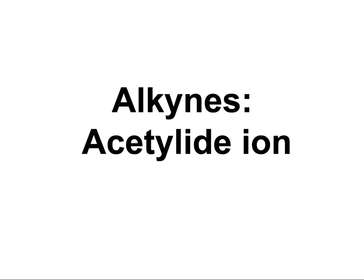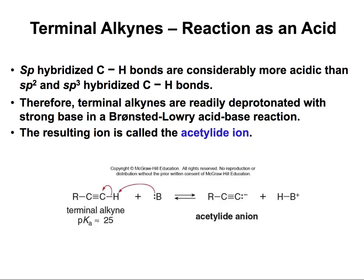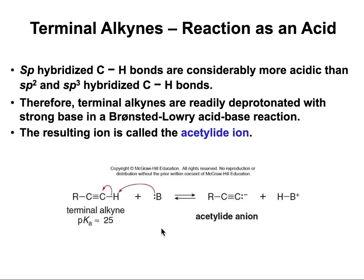The reaction we're going to see in this chapter is the use of the acetylide ion. This reaction can be very useful when trying to extend carbon chains and to add carbons to an existing molecule. We're going to start with a terminal alkyne that can be deprotonated using a strong enough base, and that will give us the acetylide ion.